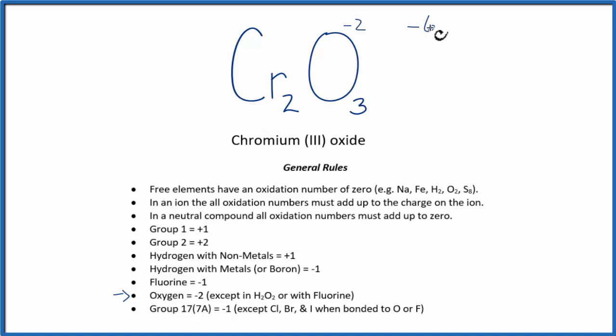So we know that if we have a neutral compound, and this is neutral, that all the numbers have to add up to 0. So if I have a minus 6 here for all the oxygens, the chromiums, they're going to have to be a plus 6. So when I add these up, I get 0, because it's a neutral compound. That means 2 times some number will give me plus 6.